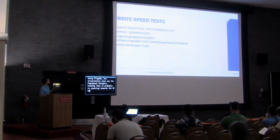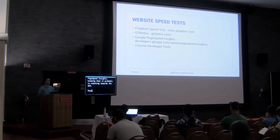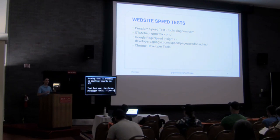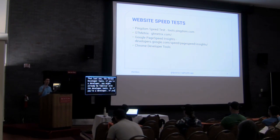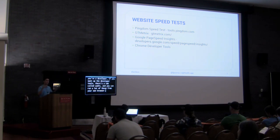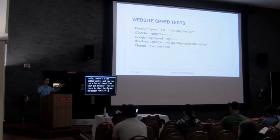The last tool is Chrome Developer Tools. If you're a developer, you might already be familiar with it. When you open up Developer Tools, there's a tab called Audit where you can run a lot of these tests from your own browser. The key difference is that Chrome Developer Tools will run based off your own current connection speed, whereas the other tools run from servers.